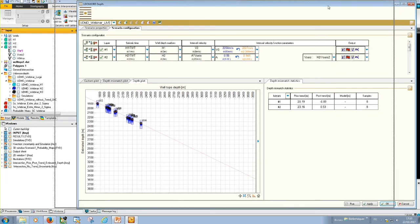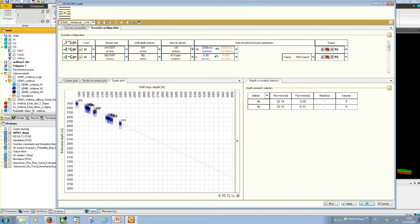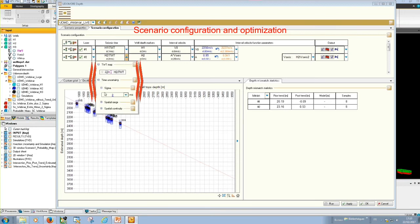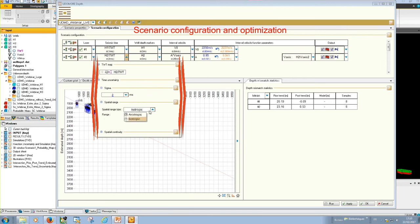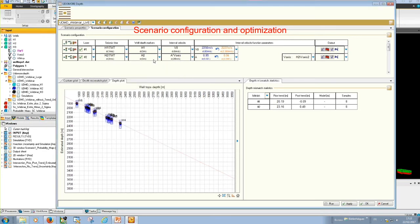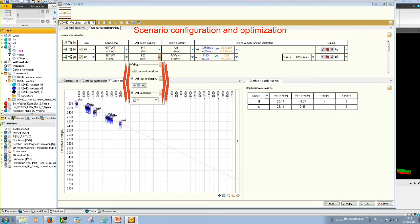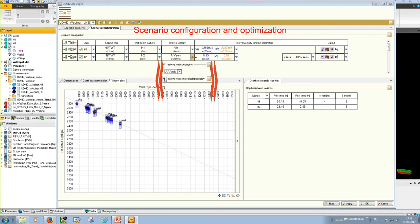That is the interface of UdomoDepth. It consists of three main sections. First section is for scenario configuration and optimization of the parameters. Here, you could input layers, seismic time, well depth markers, interval velocity, and optimize interval velocity functions. What is more important, with this function of UdomoDepth you could save really months and millions, is that you could input uncertainty on seismic time, characterizing it as sigma and characterize it in space with a measure, mean direction, and azimuth, and with spatial continuity using variogram type. You could also input uncertainty on the well depth markers and uncertainties on interval velocity residual.